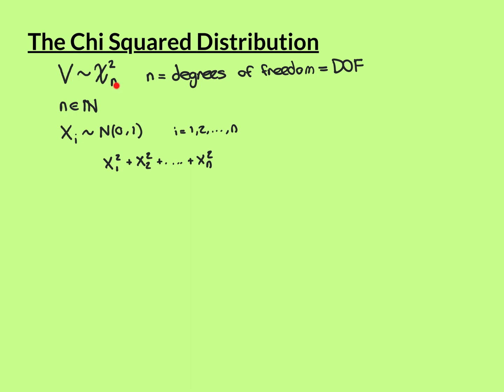You pick a degrees of freedom n — one of these natural numbers — and you need that many iid standard normals: x1, x2, x3, all the way up to xn, where i varies from 1 to n. Then what we do is square all of these and add them together: x1-squared plus x2-squared plus all the way up to xn-squared.